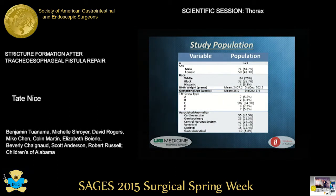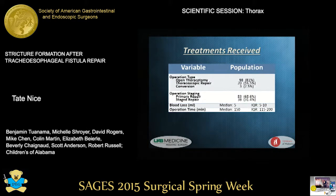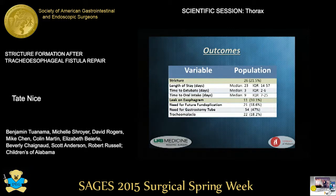The study included 121 infants with a mean gestational age of almost 36 weeks. Eighty-four percent were of gross type C, and 45 percent had an associated cardiovascular anomaly. Eighty-one percent of the patients underwent open thoracotomy for repair, and around two-thirds were repaired with a single operation, while the rest received a multi-stage approach. Twenty-one point five percent of patients developed a clinically significant stricture requiring more than three dilations. Median time to oral intake was nine days, and 10.1 percent of patients had an esophageal leak on the esophagram.